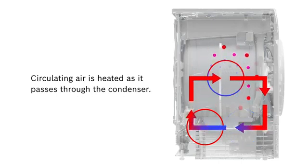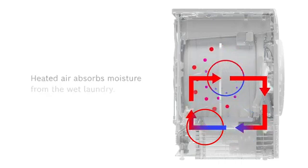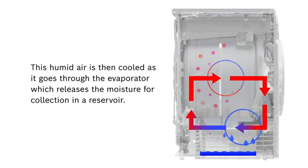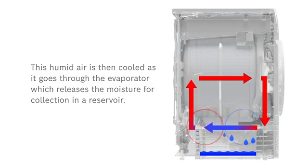Circulating air is heated as it passes through the condenser. Heated air absorbs moisture from the wet laundry. This humid air is then cooled as it goes through the evaporator, which releases the moisture for collection in a reservoir.